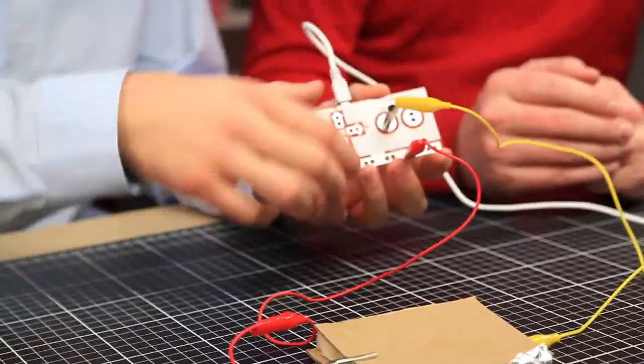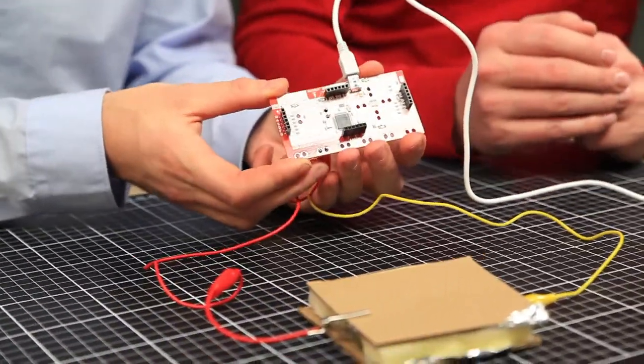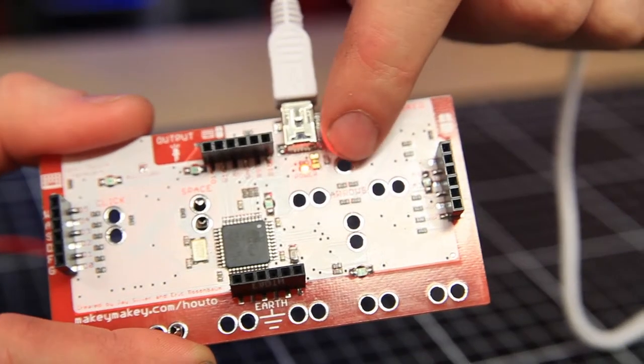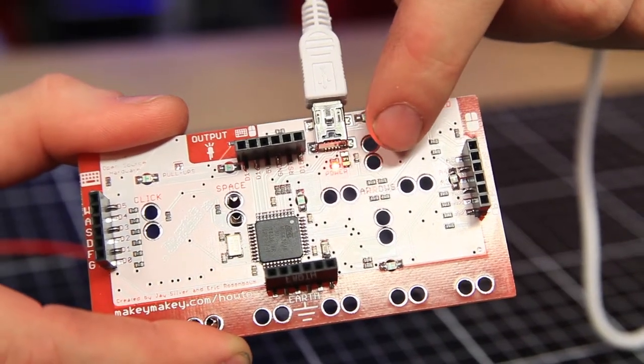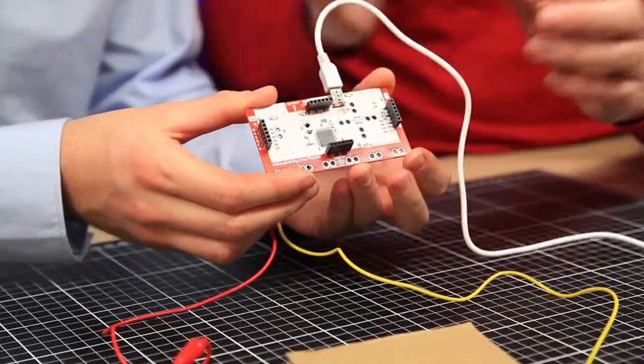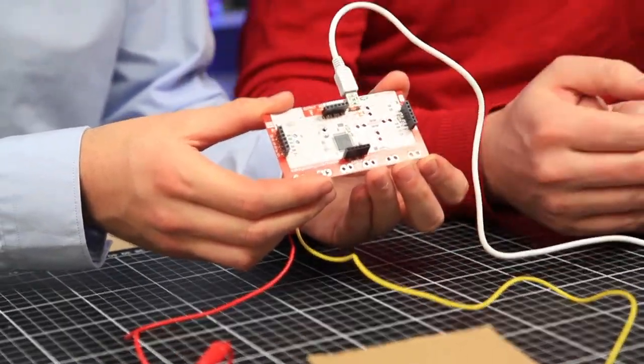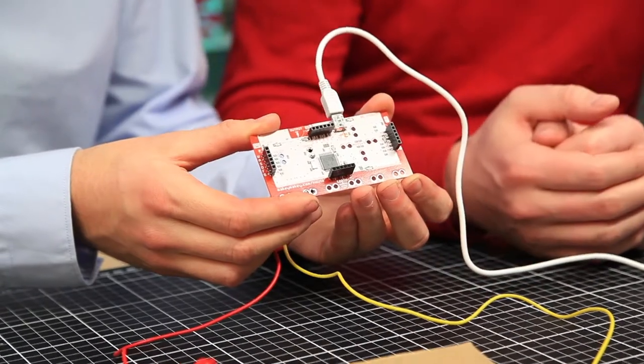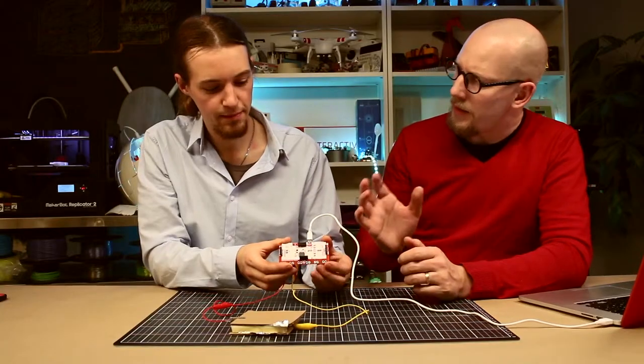And on the back side, if you turn it around, there's a red LED, and the red LED tells you if the power is on or not. So if we plug it out, you see it goes off and it goes on again, and there you can easily see if there's energy on the board or not.